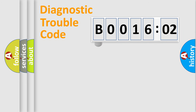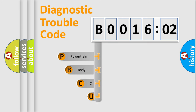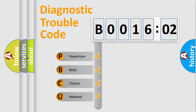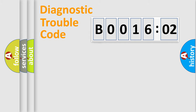First, let's look at the history of diagnostic fault code composition according to the OBD2 protocol, which is unified for all automakers since 2000. We divide the electric system of the automobile into four basic units: powertrain, body, chassis, and network.